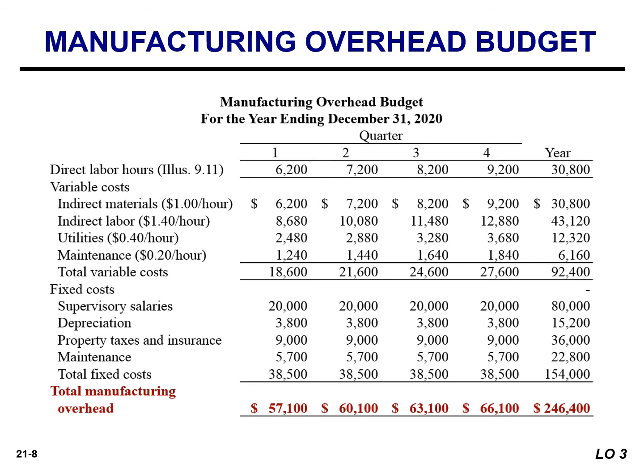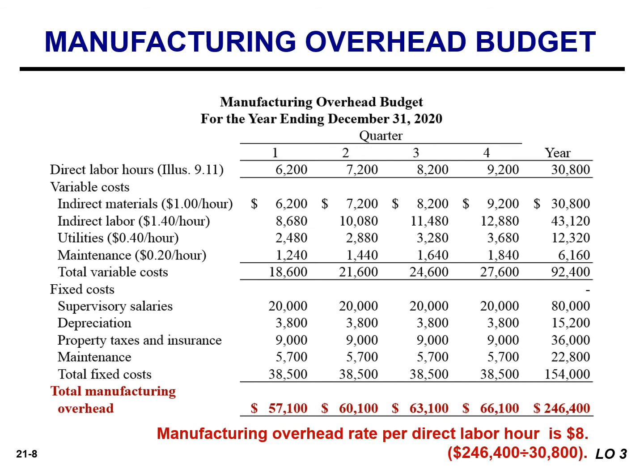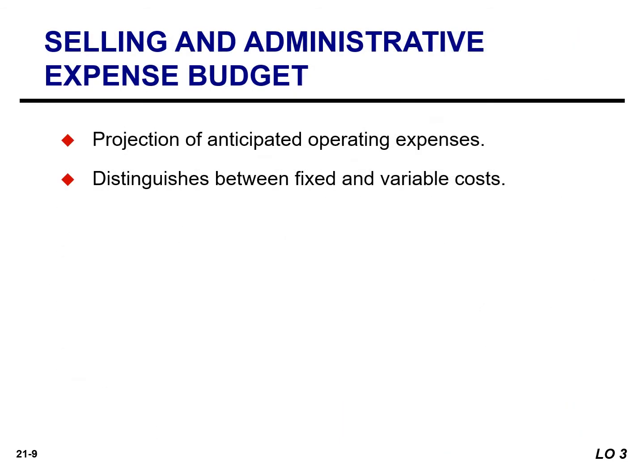At Hayes Company, overhead is applied to production on the basis of direct labor hours. The budgeted annual rate is $8, which is found by taking the total manufacturing overhead cost of $246,400 and dividing by the total direct labor hours. Hayes Company combines its operating expenses into one budget: the selling and administrative expense budget.